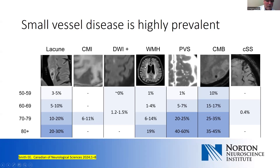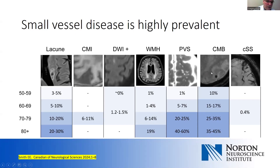White matter hyperintensities are very common — a large number of elderly patients have quite severe white matter changes. Other small vessel changes relate to dilated perivascular spaces seen in the centrum semiovale or basal ganglia. And with the frequent addition of GRE or susceptibility-weighted images, it is not unusual for patients to be found to have hemosiderin staining or cerebral microbleeds. Up to a third of patients in their 80s will be found to have cerebral microbleeds on neuroimaging.